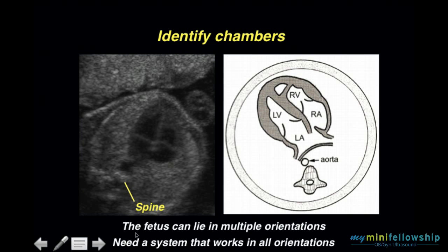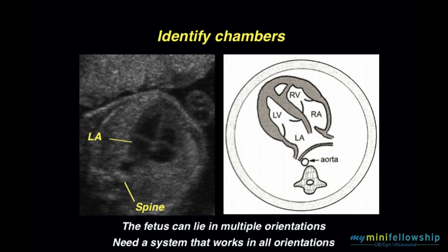We have this complication, however, when we're doing an obstetrical sonogram, and that is that the fetus can lie in multiple orientations. So we need a system that works in all orientations. Here is the system that I use: first, I identify the fetal spine. In front of the fetal spine is the descending aorta. The chamber closest to the descending thoracic aorta is the left atrium, across the AV valve is the left ventricle, across the interventricular septum is the right ventricle, and back across the AV valve is the right atrium.